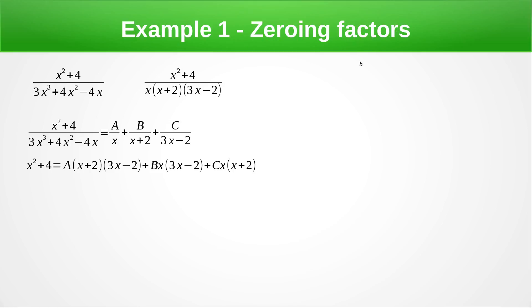So what do we mean by zeroing the factors? Well what we do is we're going to pick a value for x so that one of these brackets goes to zero. So let's pick x = 0. Now if x = 0 that B term is zero, that C term is zero and we're just left with on this side the answer 4 on this side 2 times -2 is -4A. So A must equal -1.